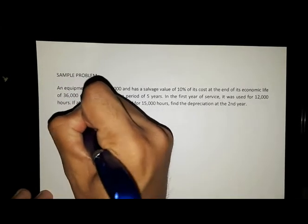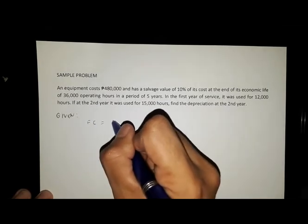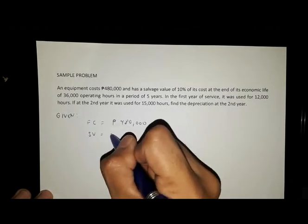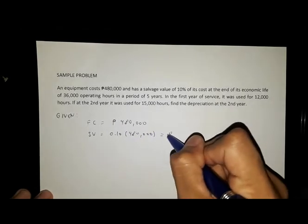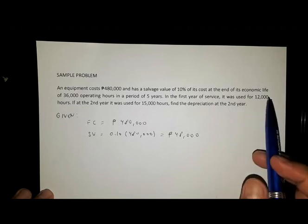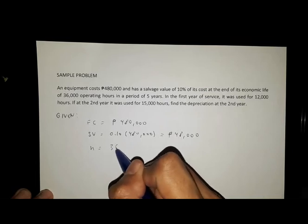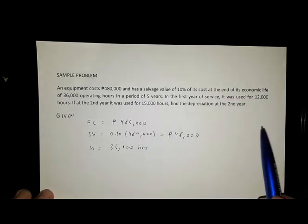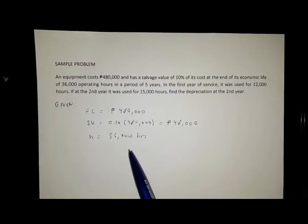Let's determine the first data given. The first cost of the equipment is 480,000 pesos. Salvage value is 10% of the first cost, so this equals 48,000 pesos. Now its economic life is 36,000 operating hours or in a period of five years.